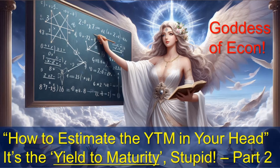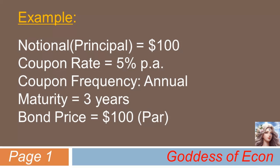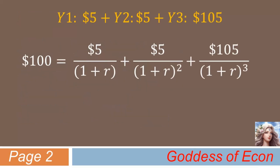Consider this part 2 of the lecture titled 'It's the yield to maturity, stupid.' Let's start with the following example. The bond's principal is $100, with a coupon rate of 5%. The coupon is paid annually, and the bond's maturity is 3 years. Let's suppose, as of today, the bond's price is $100 — that is, it is priced at par. We know that we can calculate the yield to maturity of this bond using the following formula. If we discount the bond's future cash flows including coupon and principal as in this equation, then we get R equals exactly 5%. In this case, as explained in my previous lecture, the yield to maturity comes out the same as the coupon rate, as the bond's price is at par.